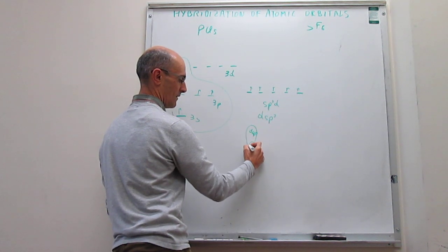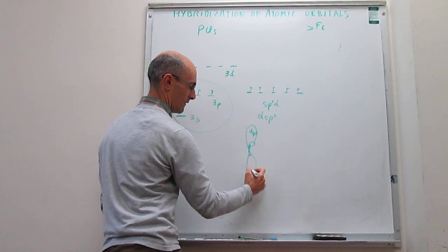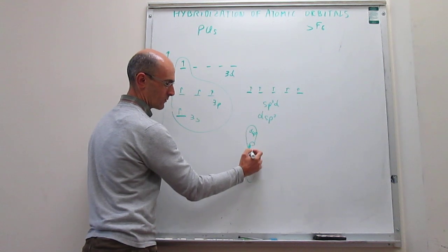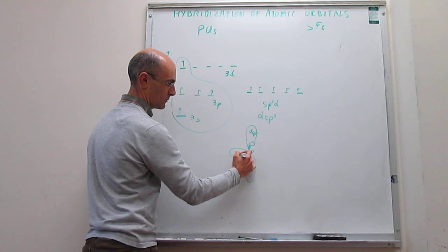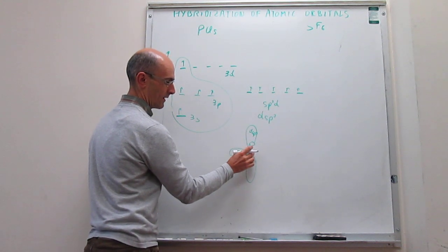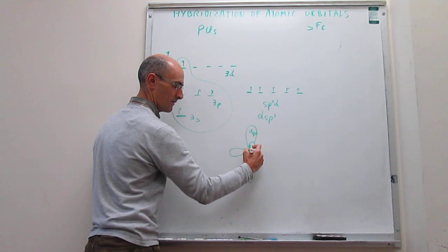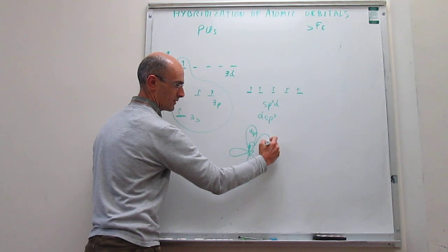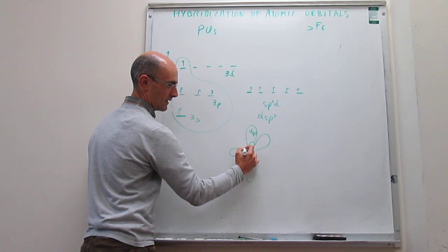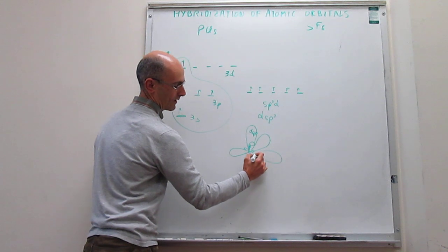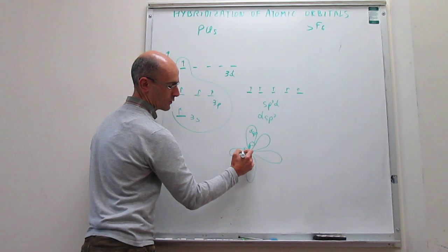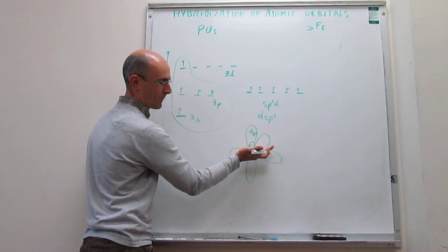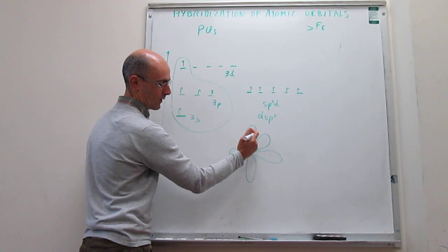You will have another hybrid orbital in the opposite direction, and then you will have three in the equatorial direction — one coming this way, another going inside the plane at 120 degrees from this orbital, and then another orbital going 120 degrees from that one. These three equatorial orbitals are perpendicular to the two axial orbitals.